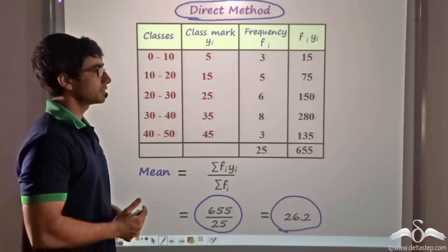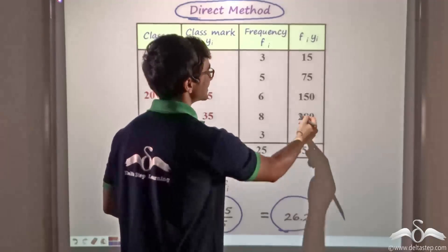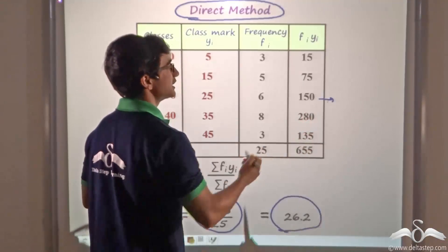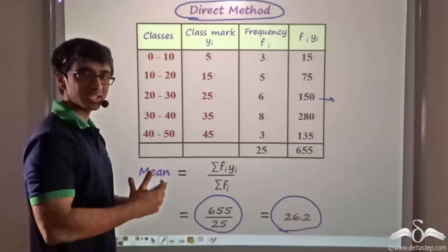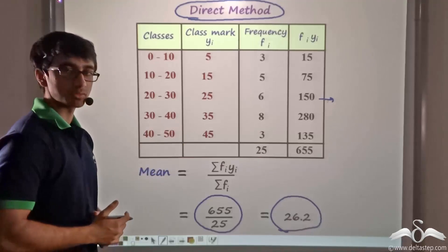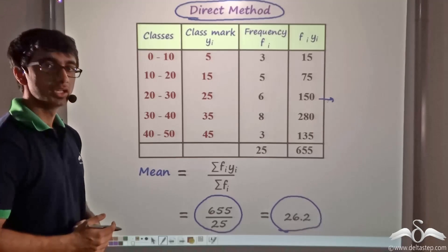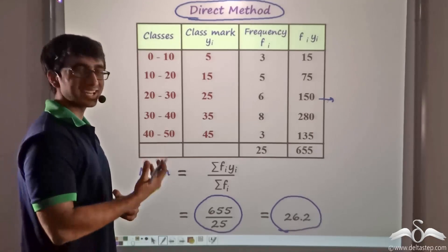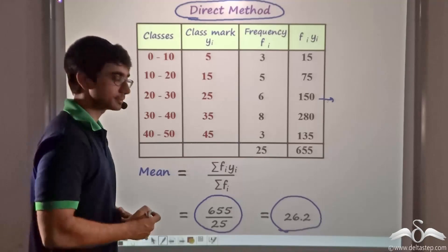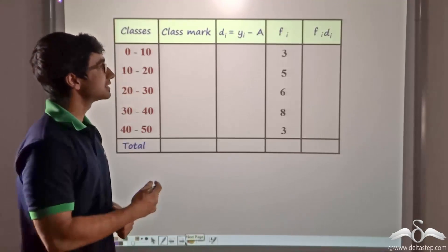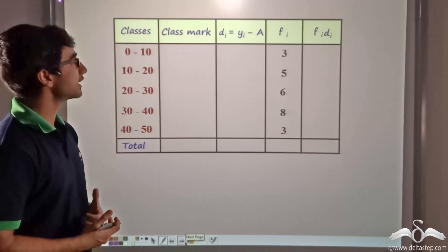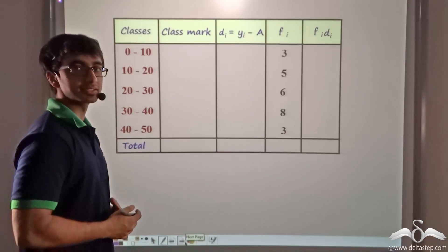If you observe closely, you will find that you had to add certain large numbers — 150 plus 280 plus 135 — giving a quite large sum total of 655. Adding large numbers and then manipulating them is a quite difficult task. This is the reason why we employ another method.